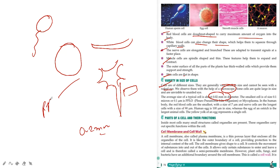But the smallest cell found is PPLO. PPLO is pleuro pneumonia like organism. You will study this in 9th also. PPLO is so small that its size is 0.1 micron, that is 0.1 micrometer.